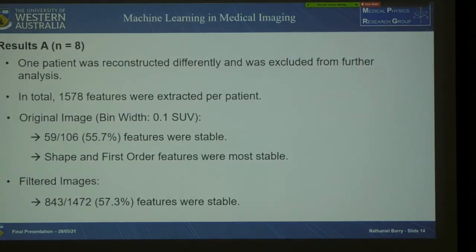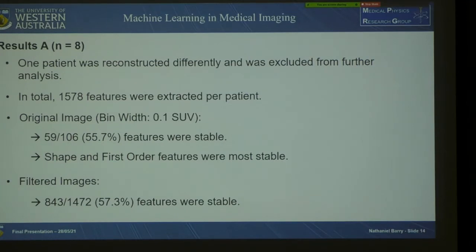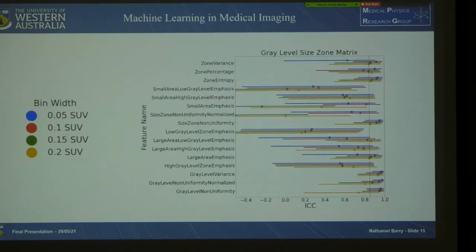Jumping into the results of Aim A: one patient was reconstructed differently and excluded from further analysis. In total I extracted 1,578 features per patient. On the original image we found that 55.7% of features were stable, with shape and first-order features exhibiting the highest percentages of repeatability. On the filtered images 57.3% of features were stable, though this doesn't give a good look at the individual filters.